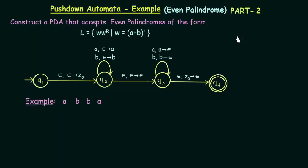In the last lecture we saw an example of a Push-Down Automata where we designed a PDA that accepts even palindromes over the symbols A and B. We also took some examples and saw how the Push-Down Automata works. If you have not watched that lecture, I request you to watch it first before proceeding with this one.